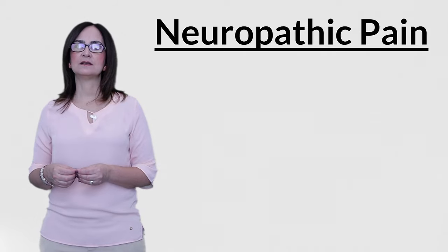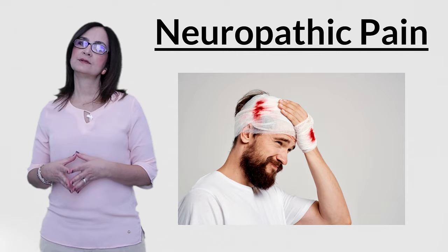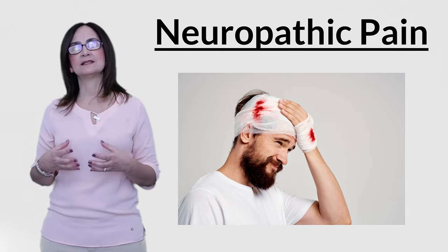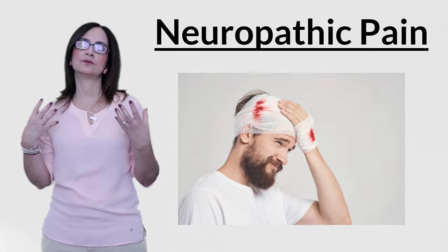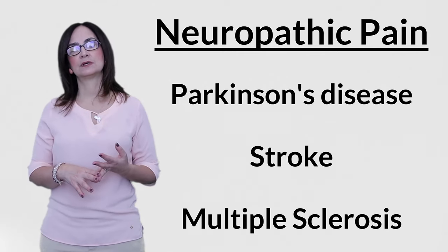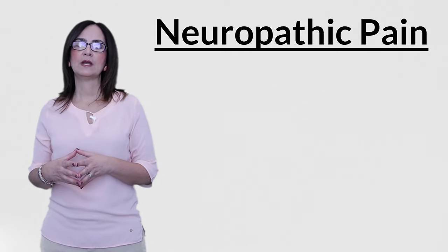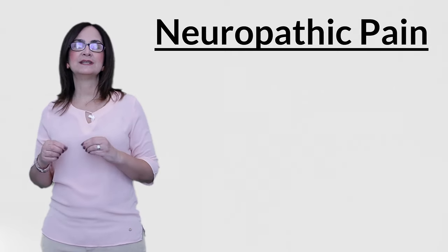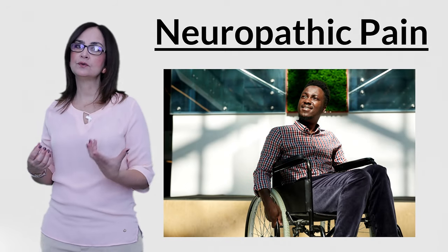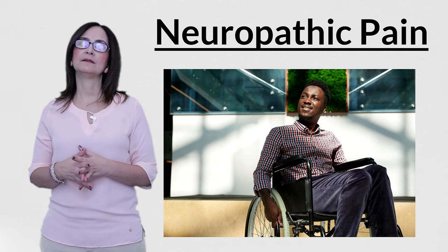When the peripheral nerve system is affected, we call this peripheral neuropathy. Neuropathic pain can also be caused by lesions in the central nerve system, which comprises the brain and the spinal cord. Diseases or lesions in the brain like Parkinson's disease, stroke, and multiple sclerosis can all cause neuropathic pain. A lesion or disease in the spinal cord — such as paraplegia, quadriplegia, an infection, or a tumor compressing the spinal cord — may also result in neuropathic pain.